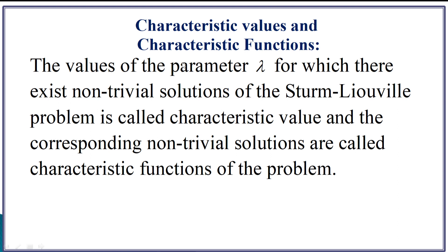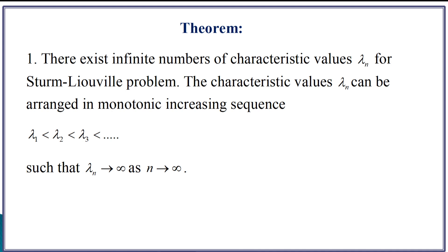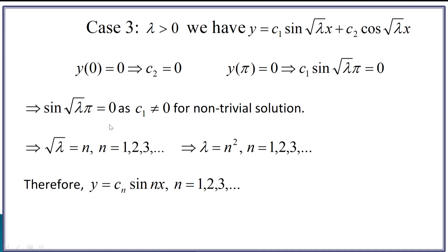What are characteristic values and characteristic functions? The values of the parameter lambda for which there exist non-trivial solutions of the Sturm-Liouville problem are called characteristic values. We have seen that not every value of lambda leads to a non-trivial solution — only for lambda > 0 did we find non-trivial solutions. Those values of lambda are called characteristic values, and the corresponding solutions are called characteristic functions. In our example, λₙ = n² are the characteristic values, and cₙ·sin(nx) for each n are the characteristic functions.